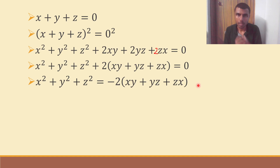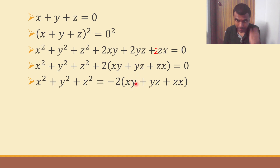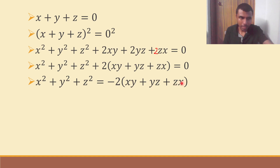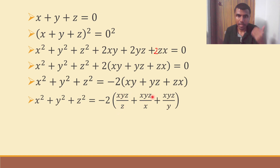Now, in this bracket, for the first term xy, I'm going to multiply and divide by z, so I get xyz by z. In the second term yz, there is no x, so I multiply and divide by x to get xyz by x. In the third term zx, there is no y, so I multiply and divide by y to get xyz by y. Observe what happened: I just multiplied and divided by z in the first term, by x in the second, and by y in the third.